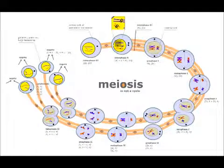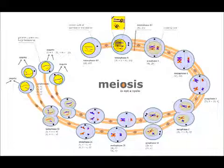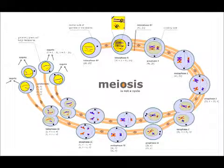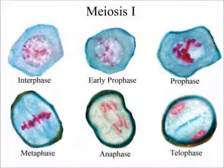Meiosis is a reduction division producing genetically different daughter cells that contain half the genetic information of the parent cells. Meiosis consists of two groups of division. Meiosis results in gametes — that is, eggs and sperm, or pollen in plants — for sexual reproduction.